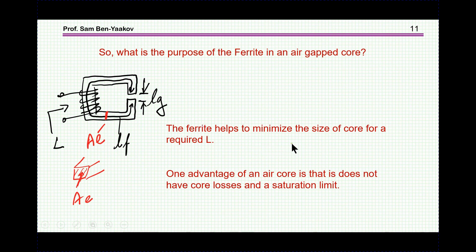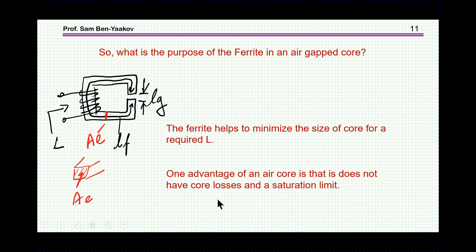So, what is the purpose of the ferrite in an air-gapped core? The ferrite helps to minimize the size of the core for the required inductance, no matter how you look at it. Now, air cores do have an advantage: they don't suffer from magnetic core losses, and of course they don't have a saturation limit. So in some cases, especially if you need to develop a very high current or a pulse, then an air core could be the way to go. But for a general switch-mode converter, when you need a moderate size inductance and current capability, the ferrite-based core is the optimum way to go.